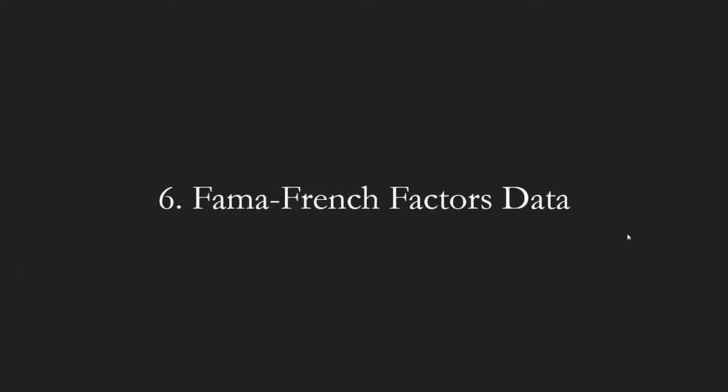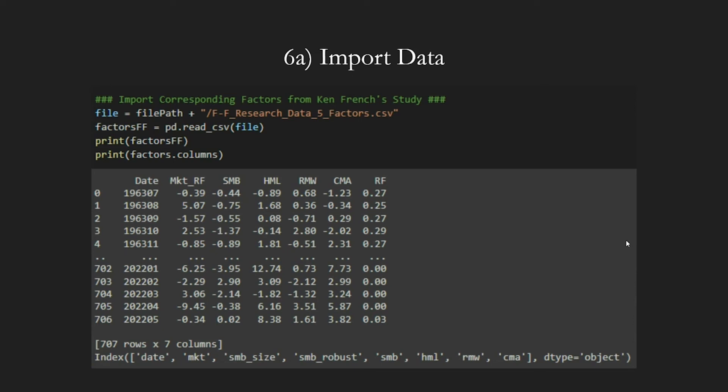Then we import and clean the Fama-French factors from the Fama-French website again. Everything remains the same besides selecting and cleaning two extra columns of data. Make sure to download the correct CSV files from the website — five, not three factors — and to read and modify it in Excel first to make it readable by Python. The code is presented in these three slides, but you should be able to edit your code independently to complete this part.